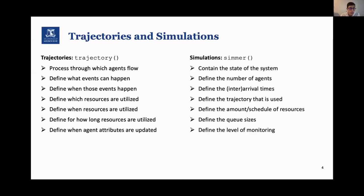The simulation environments defined using the SIMR function contain the state of the system. They define the number of agents, when they arrive, so the inter-arrival times, the trajectory to which they are to be simulated, the amount of resources or the schedule at which they become available, and the queues, so the waiting rooms for the resources, as well as the level of detail that you want, so the level of monitoring in the results.